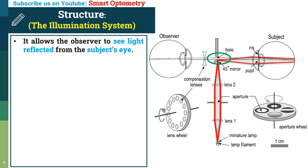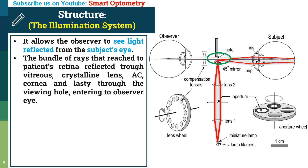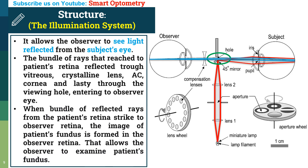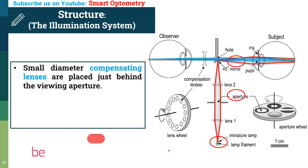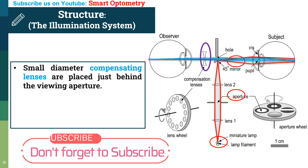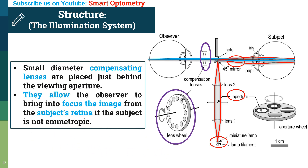The viewing system allows the observer to see light reflected from the subject's eye. The bundle of rays that reach the patient's retina are reflected back through the vitreous, crystalline lens, anterior chamber, cornea, and lastly through the viewing hole into the observer's eye. When the bundle of reflected rays from the patient's retina strikes the observer's retina, an image of the patient's fundus is formed, allowing the observer to examine it. Small diameter compensating lenses placed just behind the viewing aperture allow the observer to bring into focus the image from the subject's retina if the subject is not emmetropic.